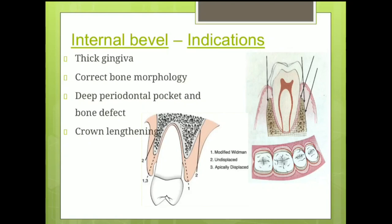Where is the internal bevel incision indicated? If you see the diagram, the position of internal bevel incision is different for different flap techniques. For an undisplaced flap, the internal bevel incision should begin at the level of the base of the pocket. Whereas for modified Widman flap and apically displaced flap, the incisions should begin as close to the gingival margin as possible. Thus, the undisplaced flap removes the pocket wall whereas the other two types of flaps remove only the pocket lining. The internal bevel incision is indicated in cases where there is thick gingival biotype, where osseous surgery is required, in cases of deep periodontal pockets and bone defects, and in cases of crown lengthening for prosthodontic and restorative purposes.